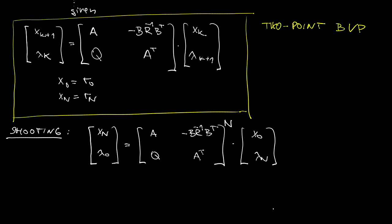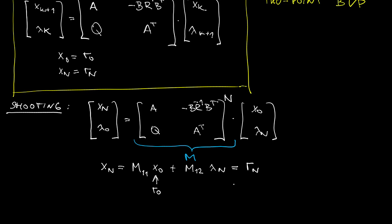In the linear case, this is particularly simple because we can find the relationship between the values at the two ends of the interval analytically. And this is given using the matrix M right here. Therefore, I can write down the state at the final time as a function of the state at the initial time and the lambda at the final time.